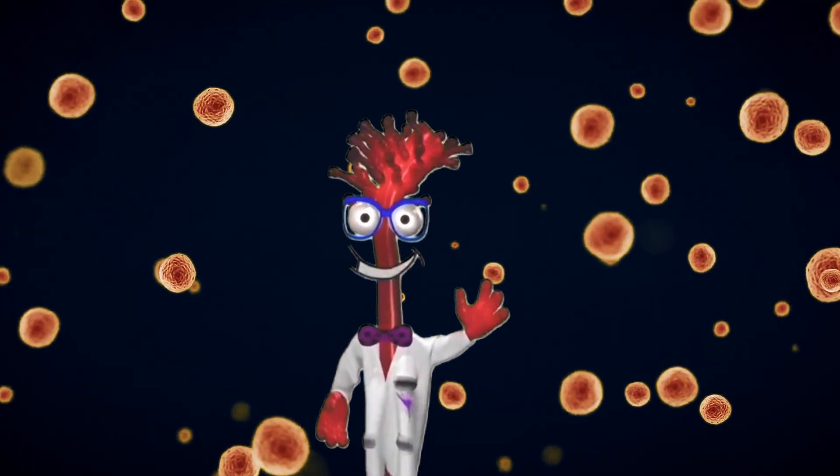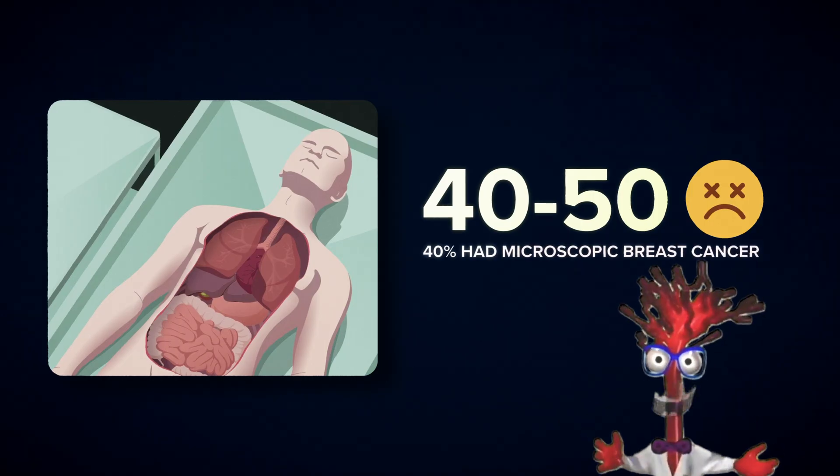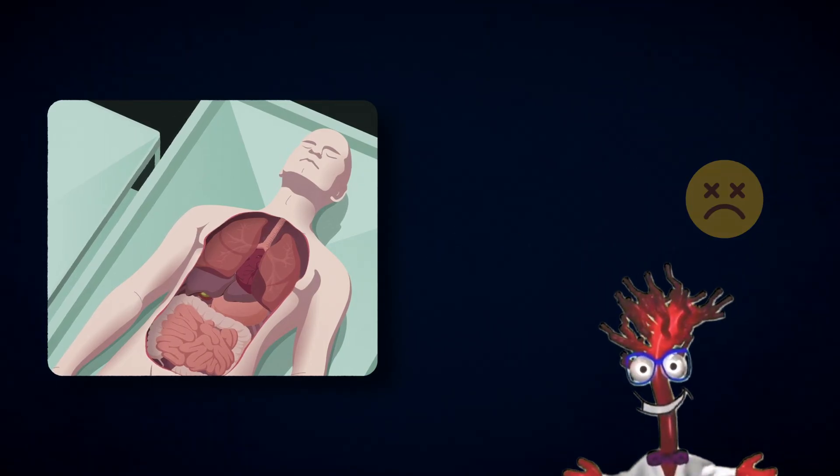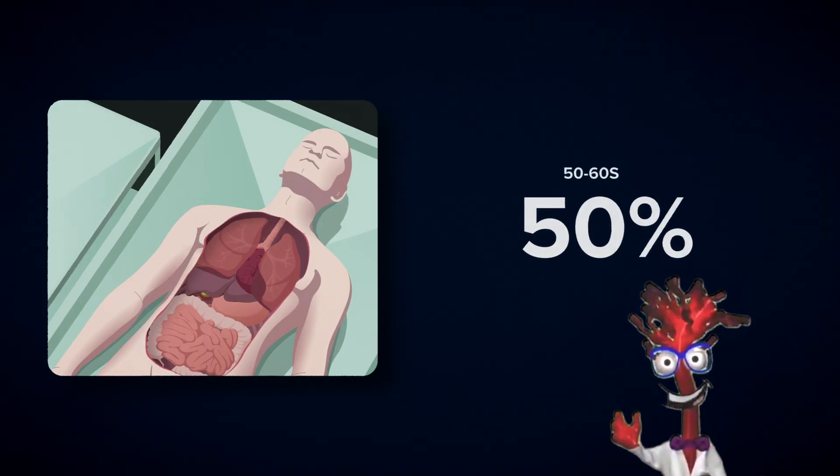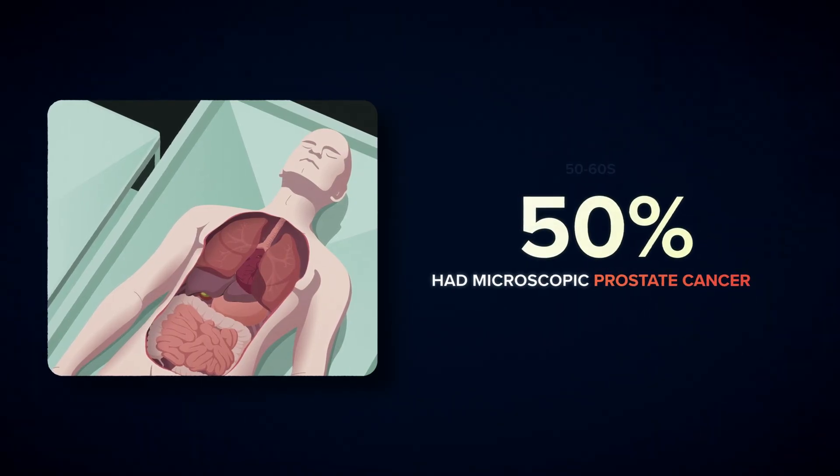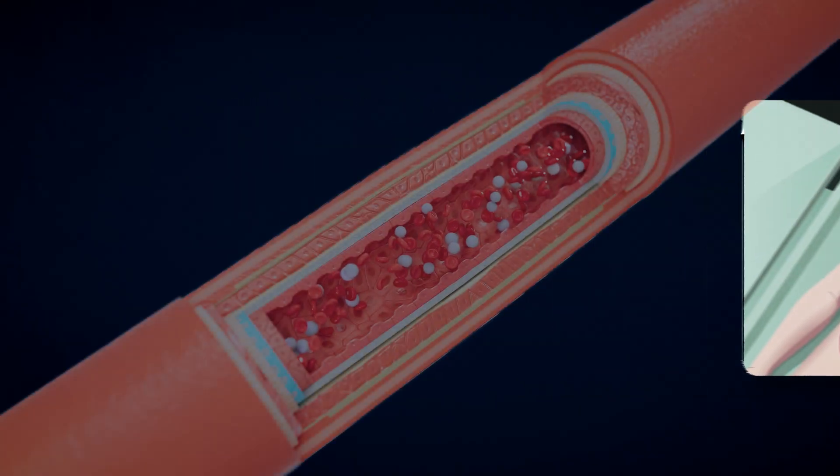In autopsies of women aged 40 to 50 who died in accidents, about 40% were found to have microscopic breast cancers. In similar studies of men in their 50s and 60s, about 50% had microscopic prostate cancers. And nearly 100% of people in their 70s have microscopic thyroid cancers. These are incredibly common, but they almost never become dangerous unless they acquire a blood supply.